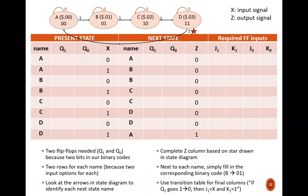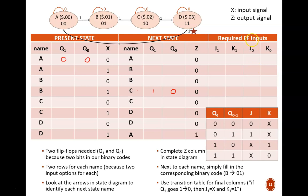These Q1 and Q0 columns are easy to fill in. Simply match each state name with its binary code. For example, here is an A, which is binary code 00. Here is a C, which is binary code 10. With this start, try to complete the rest of the table. For this rightmost section, you will need to apply the JK transition table. Pause the video.